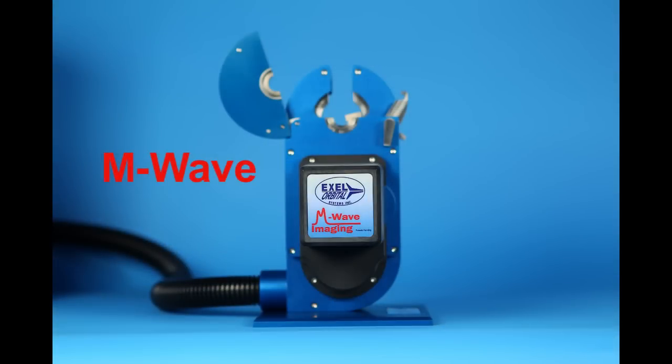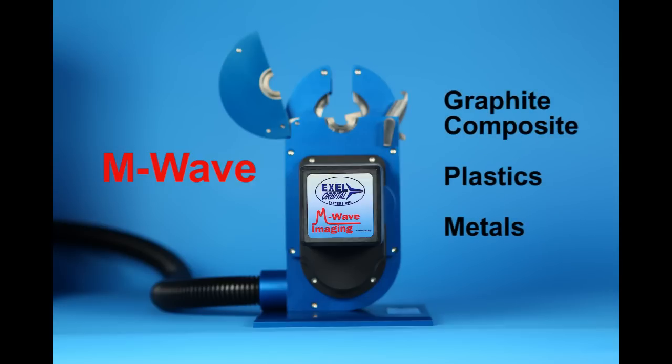A dual-tuned resonant coil produces an M-Wave signal, which enhances flaw detection through magnetic coupling. Because most materials produce an effect on this M-Wave, it is possible to use this technology to image graphite composite, plastics and metals alike.